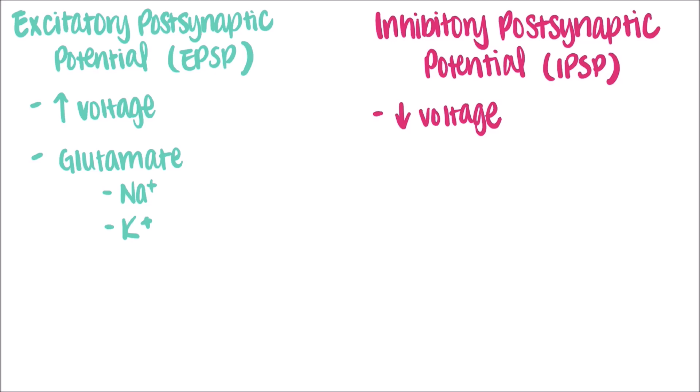The most common inhibitory neurotransmitter is GABA, which increases membrane permeability to negative chloride ions. This influx of chloride ions makes membrane potential more negative, causing threshold potential to be harder to achieve.